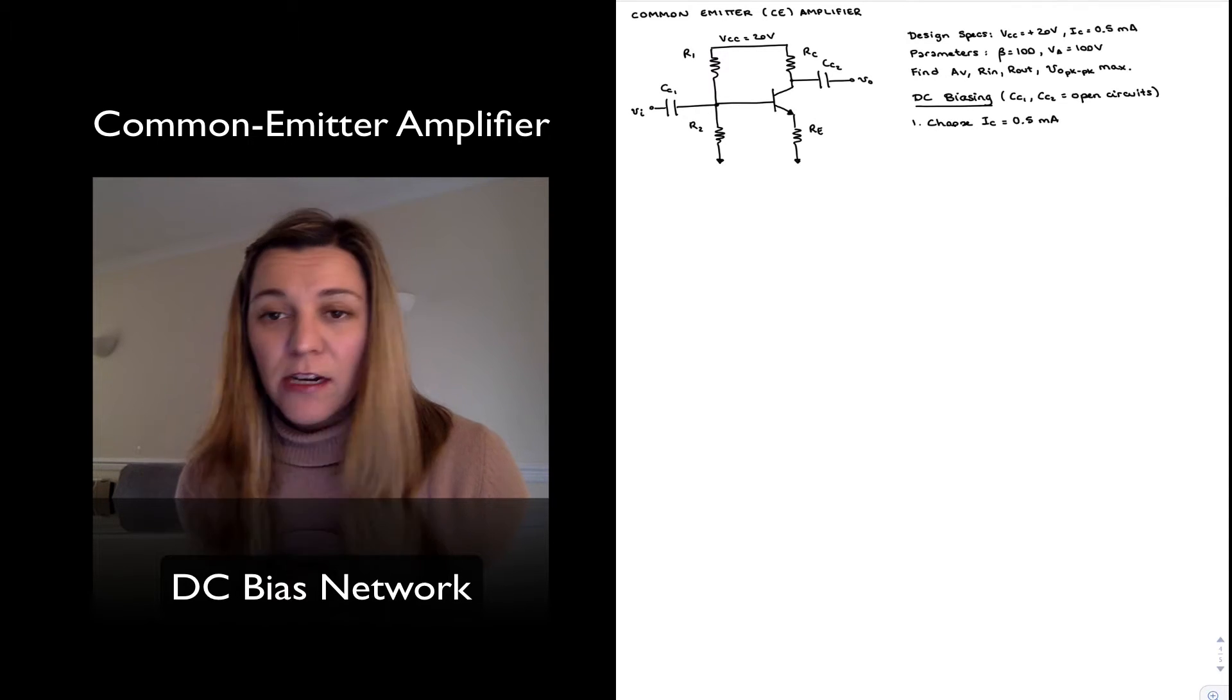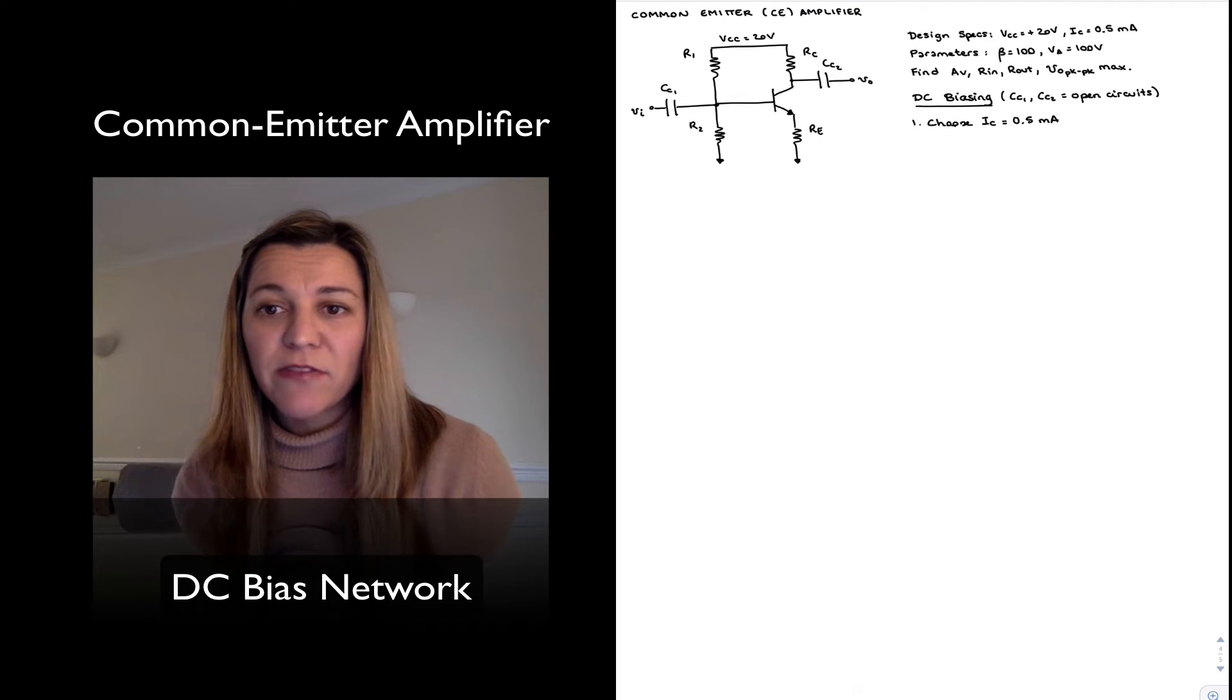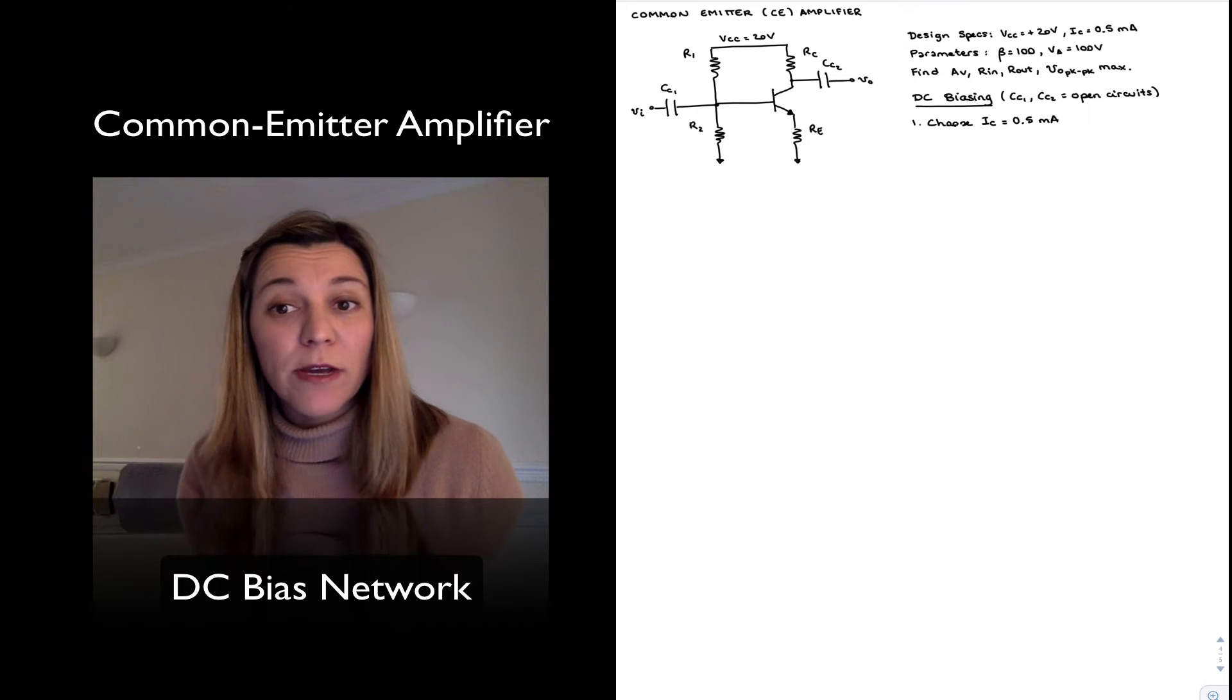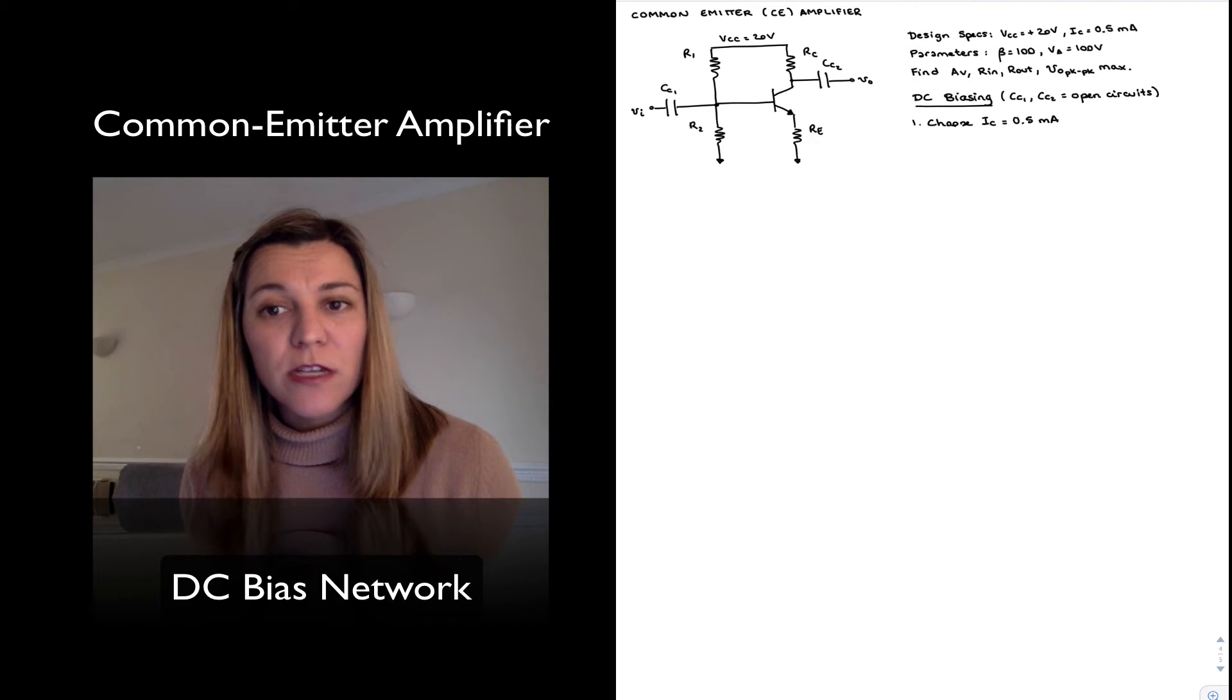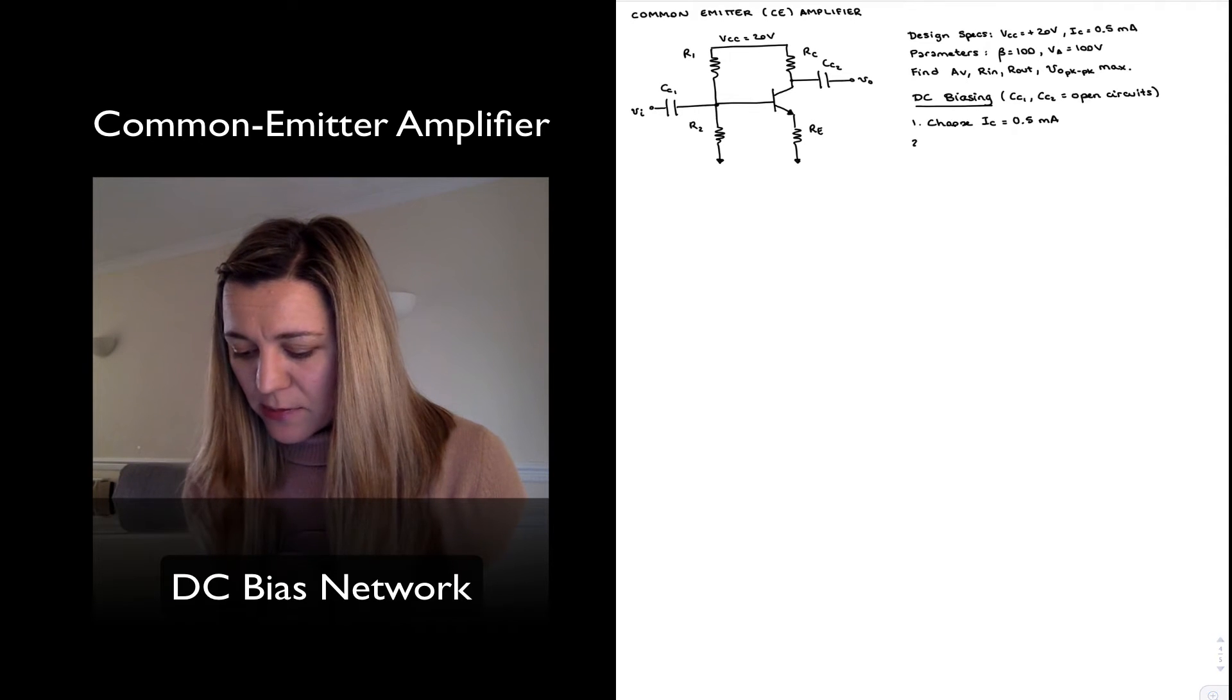But in general when we are designing, let's imagine we are designing a larger circuit, a multi-stage amplifier, we're going to need to allocate the quiescent current to the different parts of our circuit in a way that it doesn't exceed our overall current that the supply can provide. So normally we will be selecting that as a design parameter.